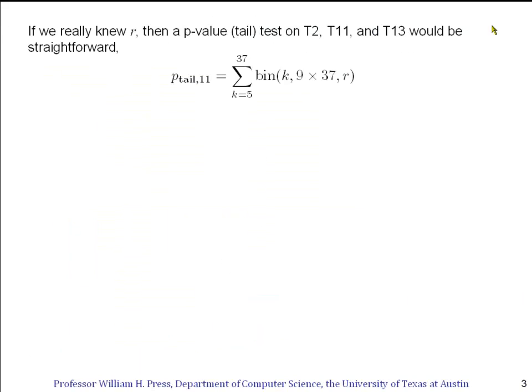Now if we really knew r, then the calculation of the p-value, the tail probability, would be very straightforward. So for example, for individual T11, the tail value would be the binomial probability, in other words, the probability of seeing a certain number of mutations. And we would sum that probability from the value that we actually see, five, through all more extreme values, all the way up to 37, the total number of loci.